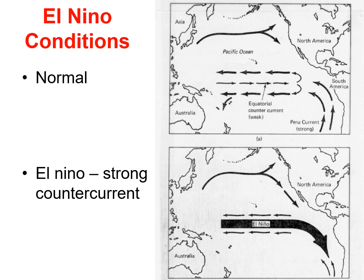Some scientists feel that the trigger necessary to start an ENSO event lies within the changing of the seasons, especially the transition periods of spring and fall. Others feel that the winter monsoon plays a major role in triggering a major El Niño event. It appears that an ENSO episode and the monsoon system are intricately linked, so that a change in one brings about a change in the other.